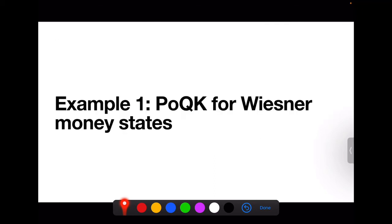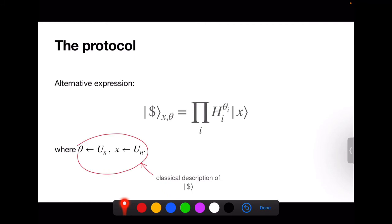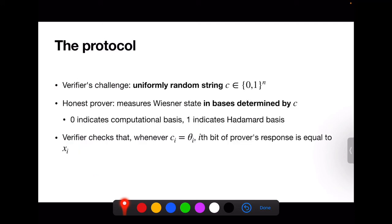Now we come to an example. We show that there are actually protocols which instantiate the definition. Let's recall Wiesner's quantum money: the money state |$x, θ⟩ is generated by the bank selecting classical strings x and θ uniformly at random, where θ encodes which qubits had Hadamards applied. If the i-th bit of θ is 1, that qubit had a Hadamard applied; otherwise it did not. X and θ completely specify the Wiesner state, and the bank keeps these strings to verify.